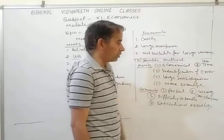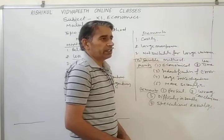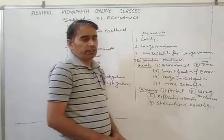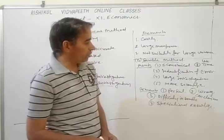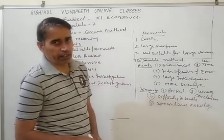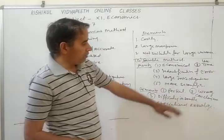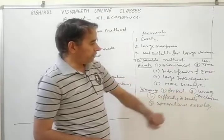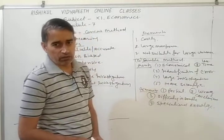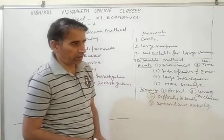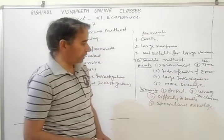Second is wrong conclusions. Sometimes the items selected by investigators do not 100 percent represent the entire population or universe. If those items do not represent the entire population, then the results are not accurate or reliable, so our conclusions can be wrong or less accurate.